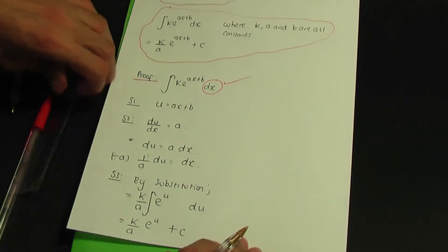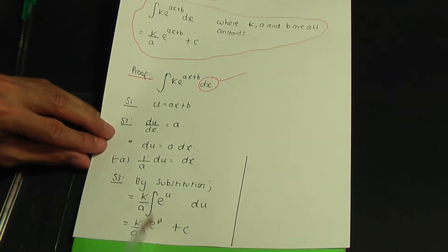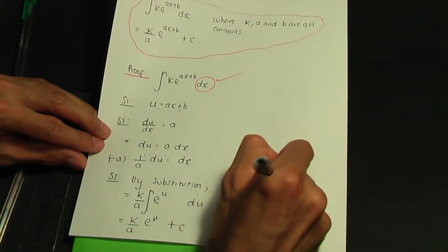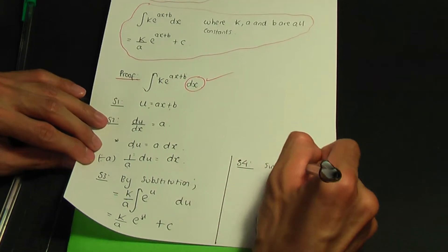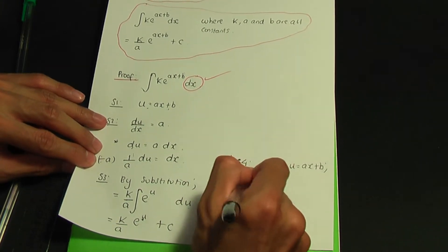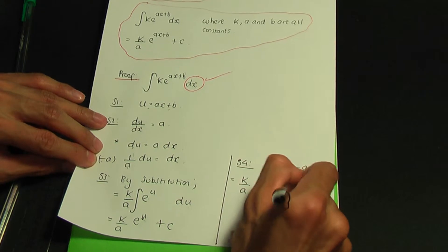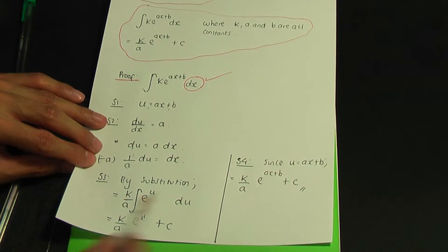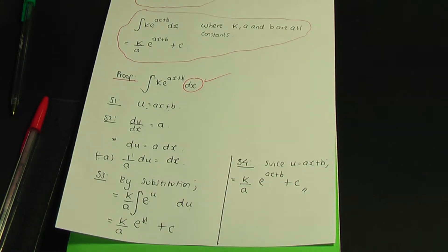Now let's write our answer in terms of x. Since u is ax plus b, that takes us to step four. Replacing u back gives us k/a · e to the power ax plus b, plus c. That is how the result is derived — using substitution. If you're unfamiliar with substitution, there is a link to that video in the description below.